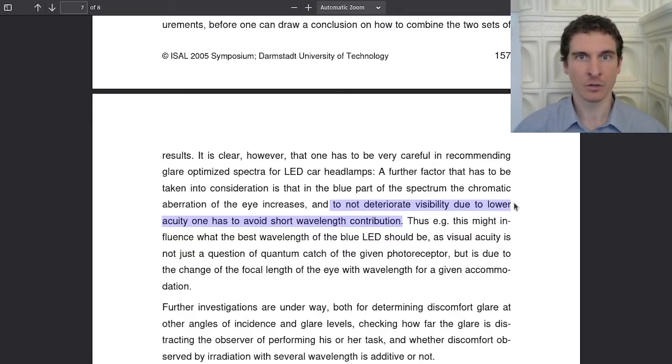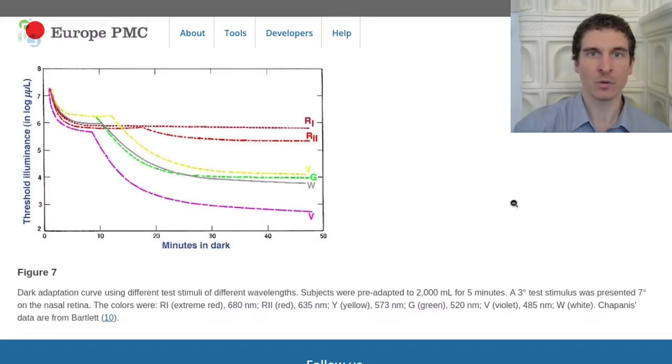In everything else, bluer headlights are also worse for the driver. They lower visual acuity, which means that things will appear less sharp. Also, dark adaptation is slowest after exposure to blue light.